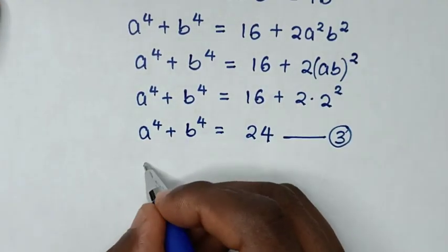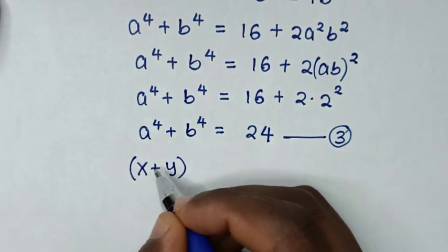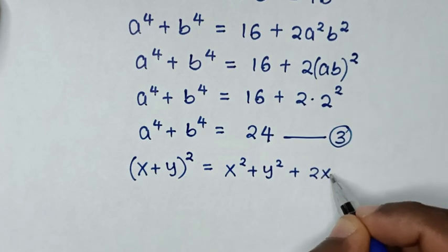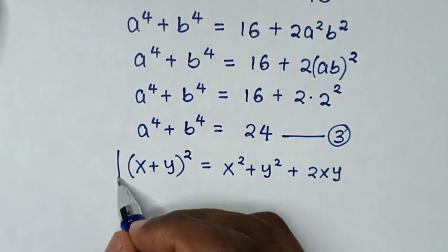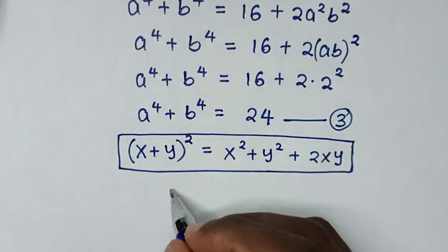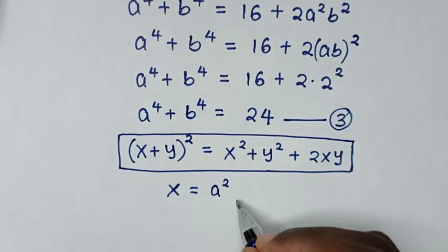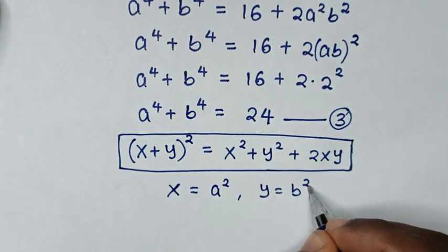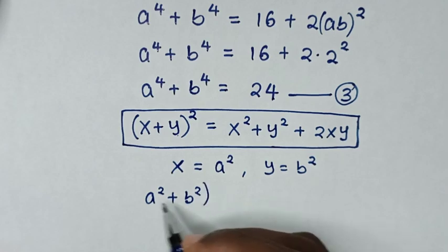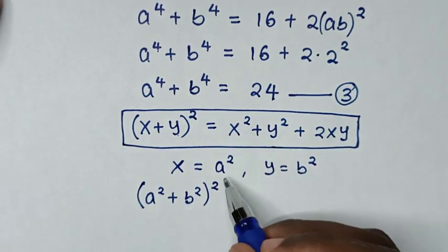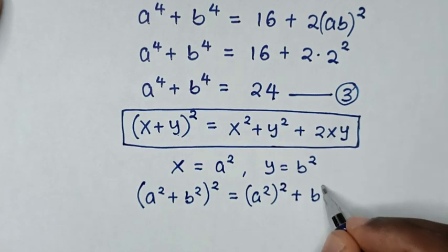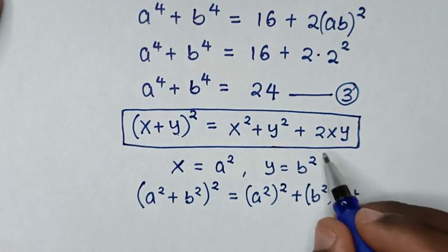Then in the next step we apply the rule: (x + y) squared is equal to x squared plus y squared plus 2xy. From this rule, we let x equal to a squared and y equal to b squared.